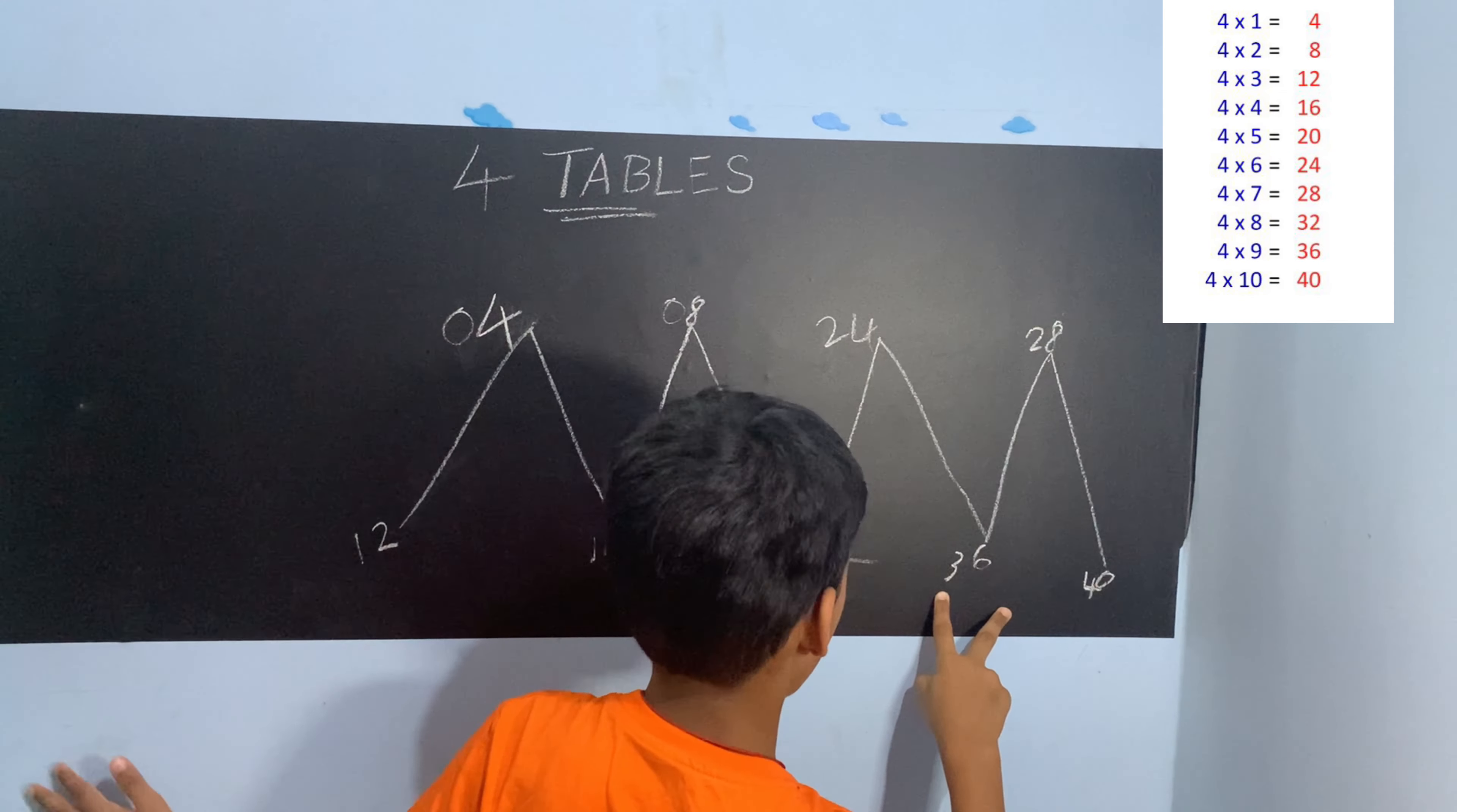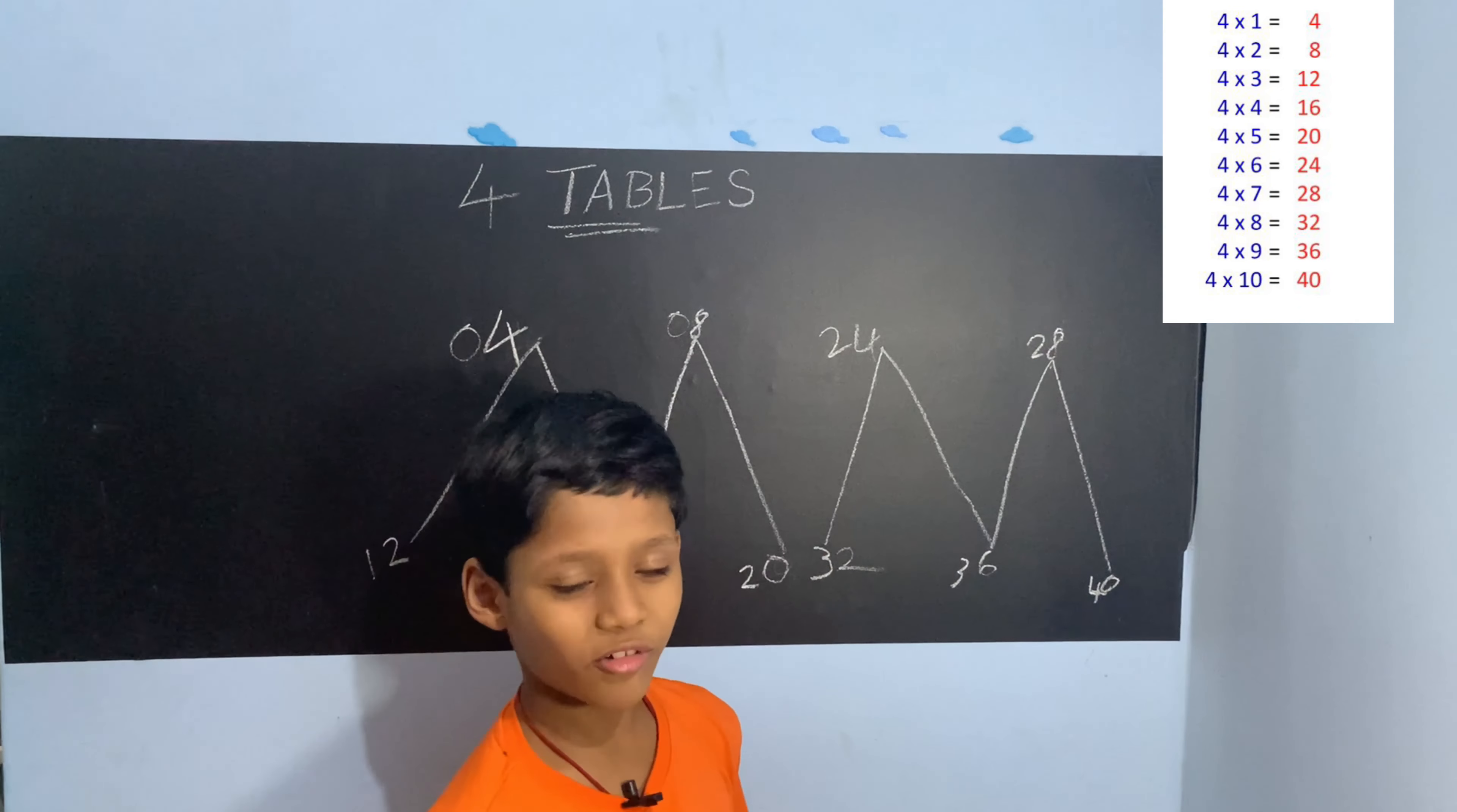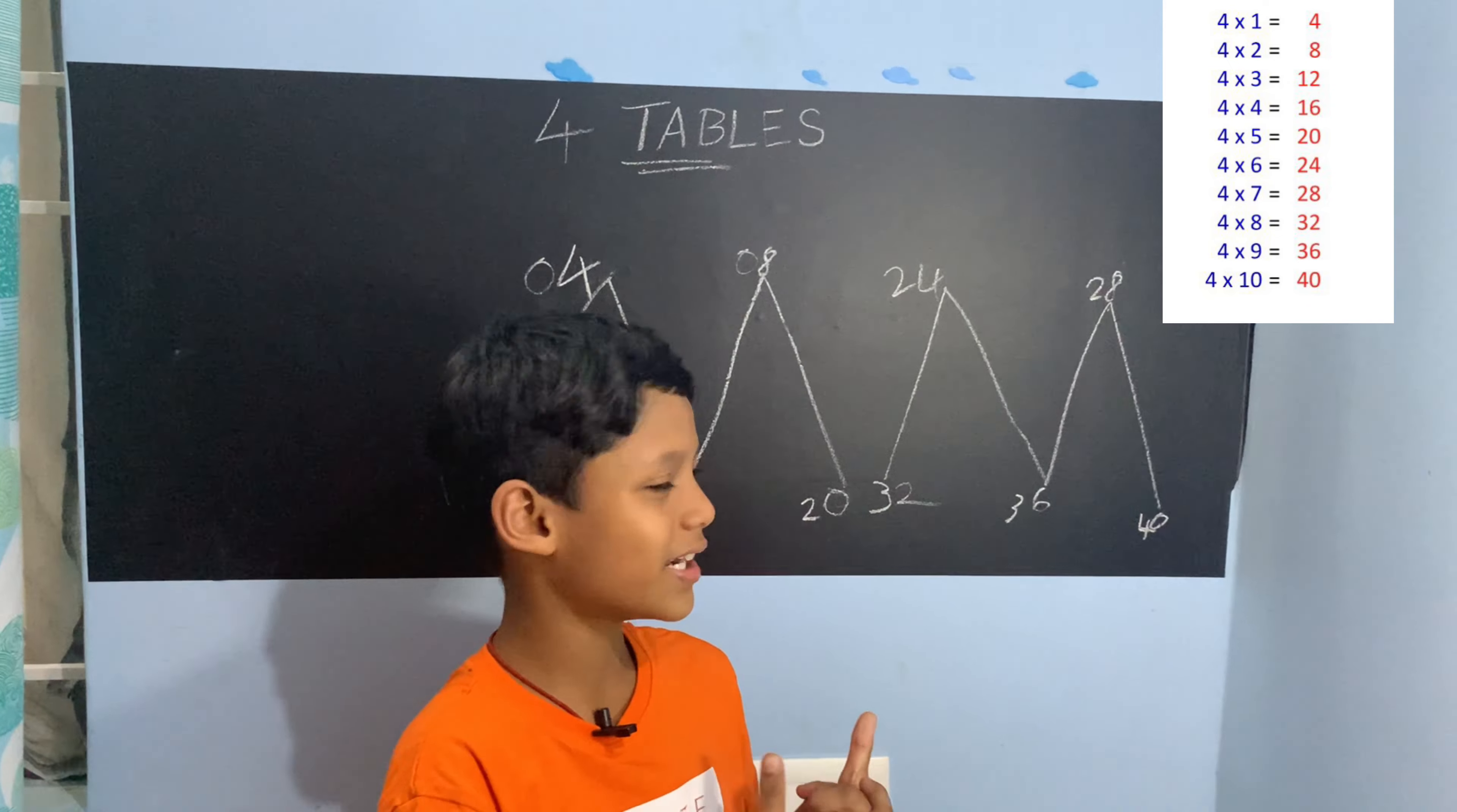Nine times four is 36. Ten times four is 40.